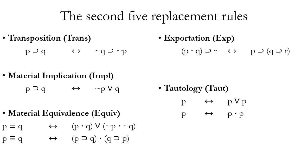For exportation, this allows you to move from a conditional whose antecedent is a conjunction to another conditional where the consequent is a conditional, and where you remove a second conjunct from the antecedent and place it in the consequent.